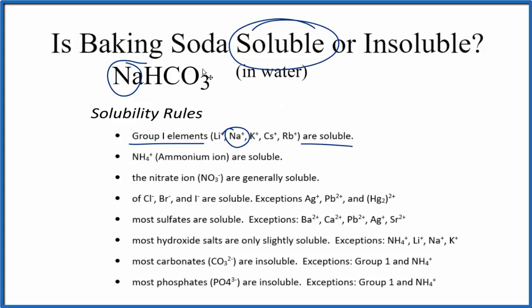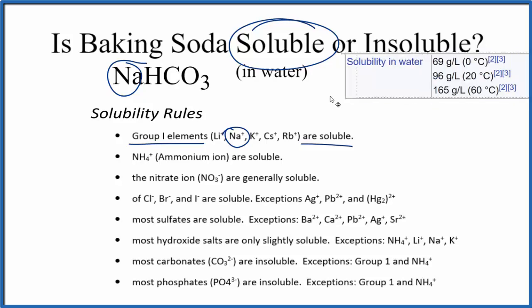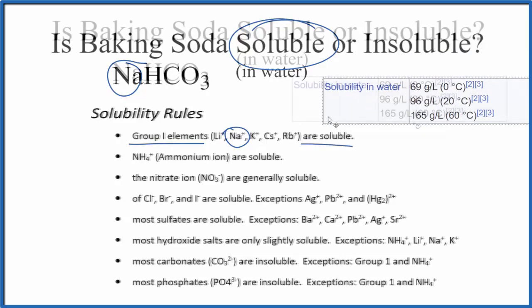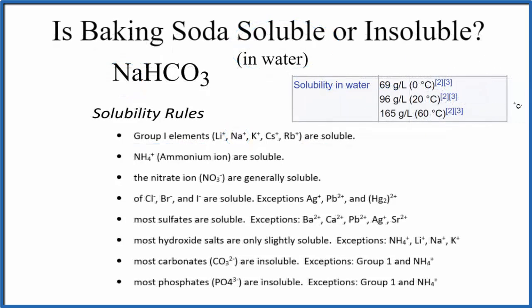We could also look up data specifically for baking soda to see how much dissolves in water at different temperatures. That would look like this here. So we can see at 20 degrees Celsius, 96 grams dissolves in 1 liter.